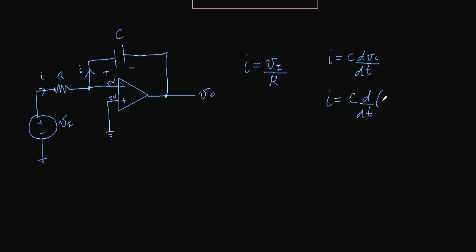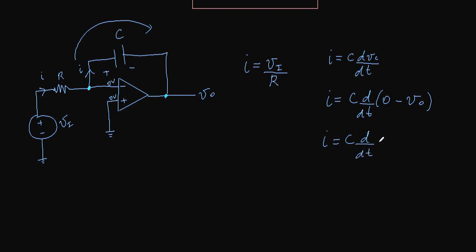The voltage across the capacitor is zero minus V_out (i.e., minus V_out), because the current flows from the virtual ground node toward V_out, meaning the voltage is higher at the zero-volt node. So I equals C times d/dt of (minus V_out). Since no current enters the op-amp input, all current goes through the capacitor, giving VI over R equals minus C times dV_out/dt.